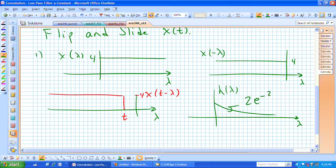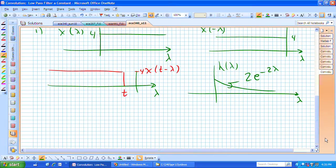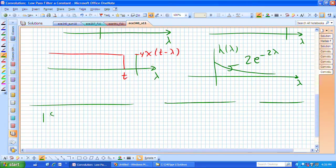It's now 2 e to the minus 2 lambda, and that's h of lambda. Let's now convolve these.